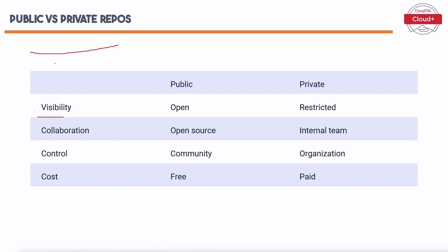In terms of visibility, public repositories have open visibility, allowing anyone to view and contribute, promoting open-source collaboration. Private repositories have restricted visibility, accessible only to authorized users, providing better control and security for proprietary code. Public repos support open-source projects while private repos are used for internal development. Public repos are maintained by the community, while private repos are managed by organizations. Public repositories are generally free while private repositories often come with a cost offering additional features and security.